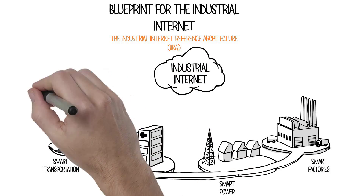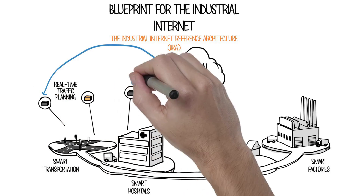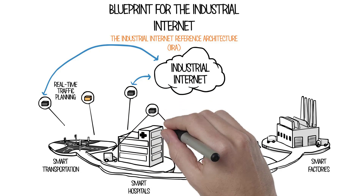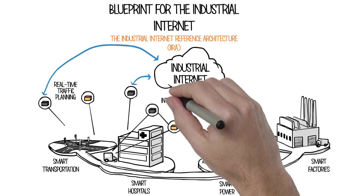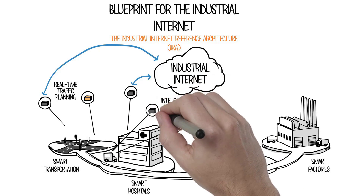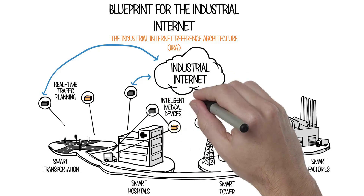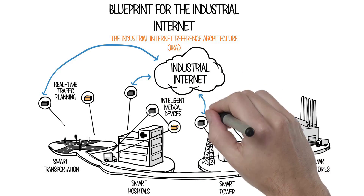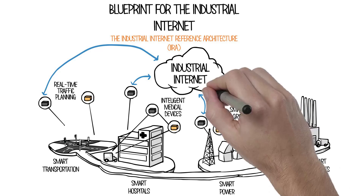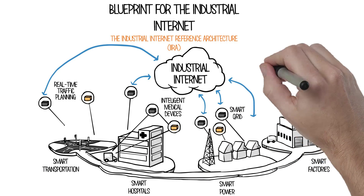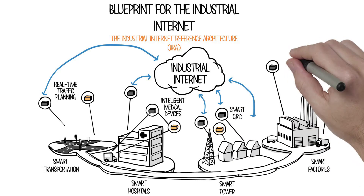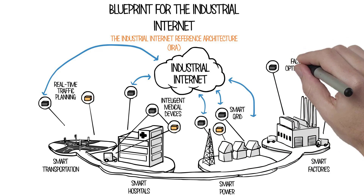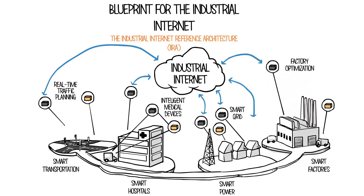Unlike the regular internet, the industrial internet must meet higher standards of security and safety. It must also stand the test of time. The industrial internet needs a common architecture to connect sensor to cloud, power to factory, and cities to medical services.